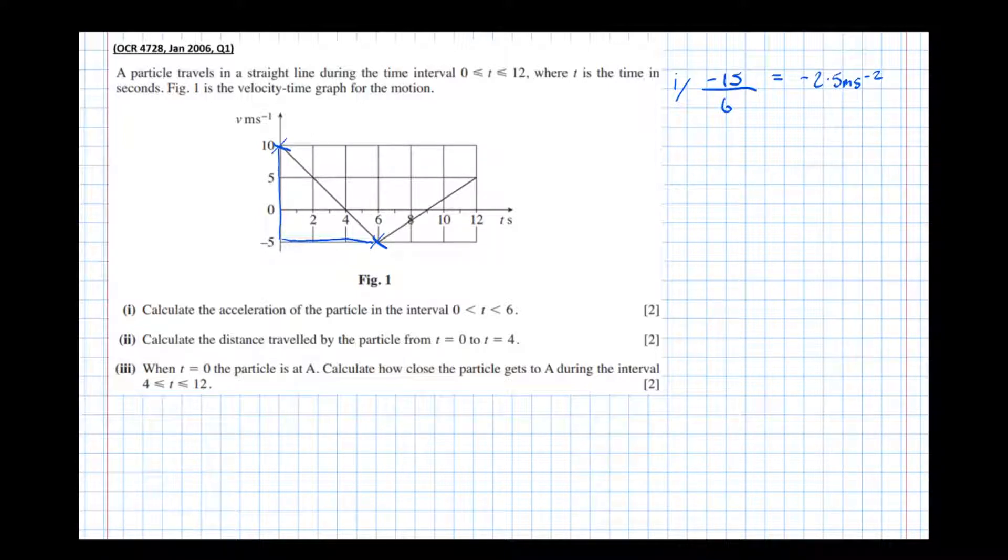Now it says calculate the distance traveled by the particle from t equals 0 to t equals 4. Well in this context, the distance traveled, to get from velocity to displacement, we need to integrate.